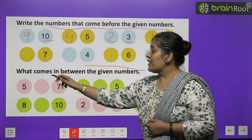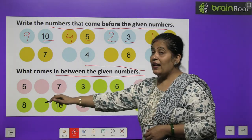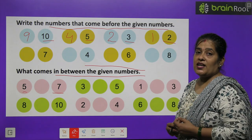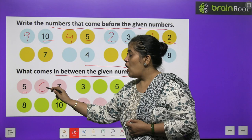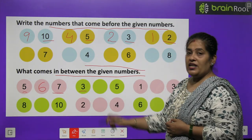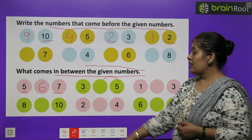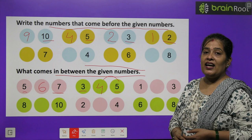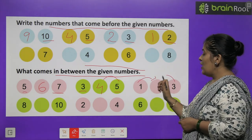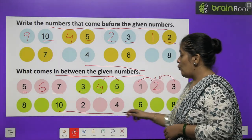What comes in between the given numbers? 5 aur 7 ke beech mein kaun sa number aata hai? 5 ke baad aata hai 6 aur 7 se pehle kya aata hai — 6. Toh in dono numbers ke beech mein aata hai number 6. The next pair is 3 and 5 — 3 ke baad kya aata hai? 4. Aur 5 se pehle bhi kya aata hai? 4. Next is 1 and 3 — after 1 is number 2. The rest of the parts you will do by yourself.